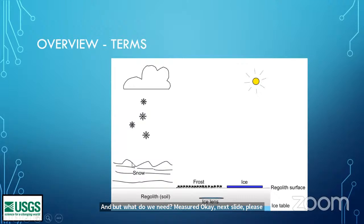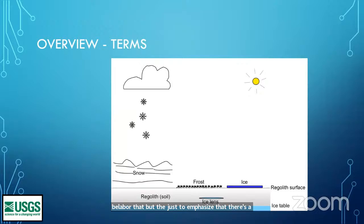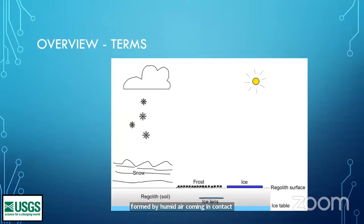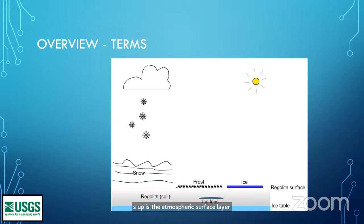I think all of us know what snow is, but just to emphasize there's a distinction to be made between snow and a slab of ice sitting on the surface. Snow is a much more subtle and difficult to model beast than a slab of ice. Frost is the fluffy stuff formed by humid air coming in contact with a cold surface. I'll try to make a distinction between the regolith surface — the top of the ground — and the atmospheric surface layer — the lowest part of the atmosphere.